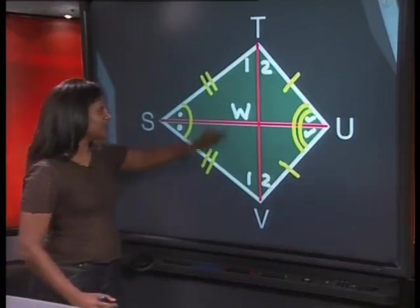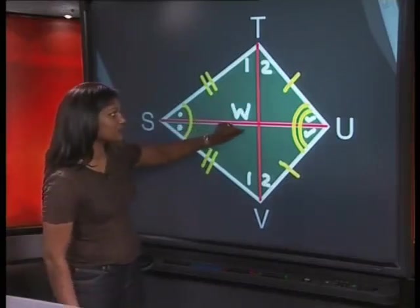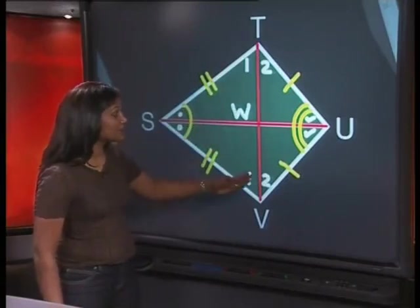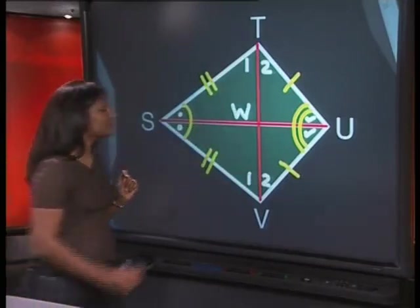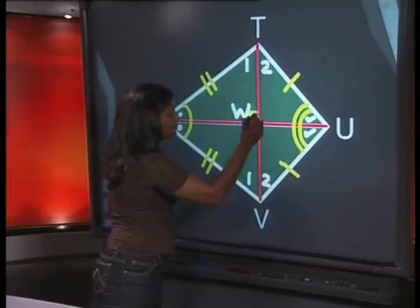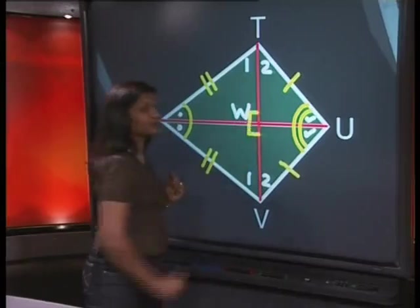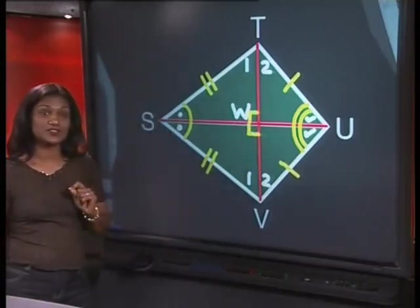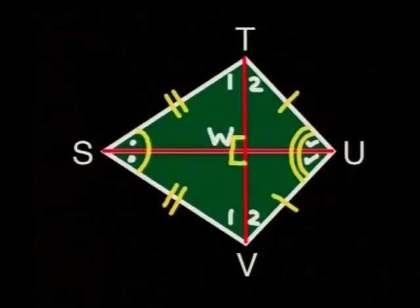Can you see how that helps us? So, this angle at W is equal to this angle at W, but they lie on a straight line. So, they both must be 90 degrees. That's what we wanted. The diagonals must intersect at right angles.